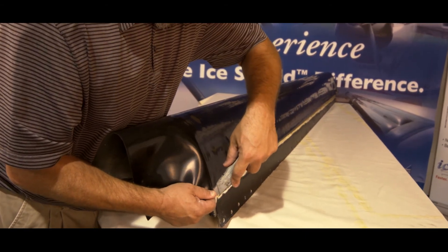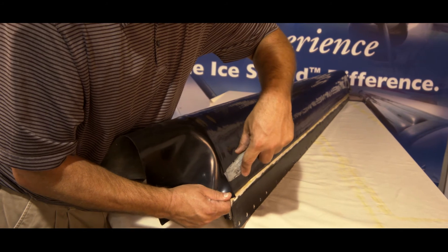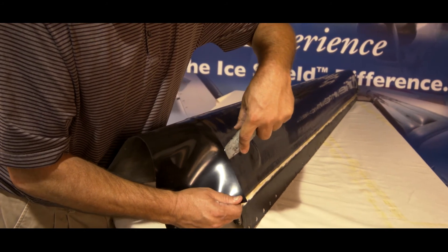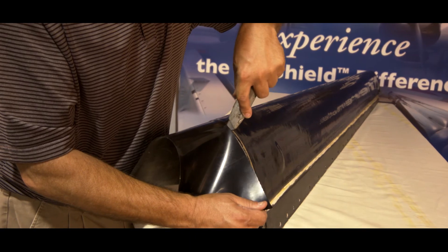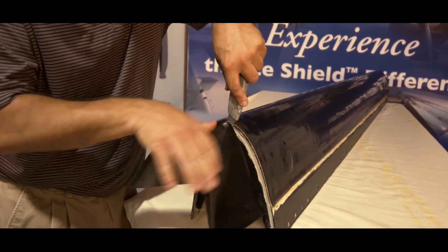If needed, trim any excess boot using a sharp utility knife, making certain that no cut is made in the active area of the boot, the area within the visible stitch lines.